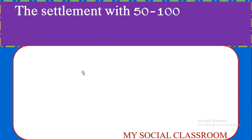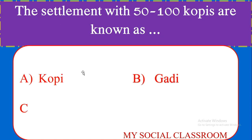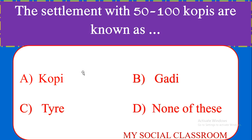The settlement with 50 to 100 copies is known as: Copy, Gadi, Tire, or None. Correct answer: Gadi.